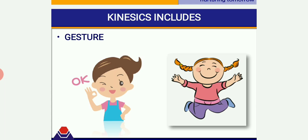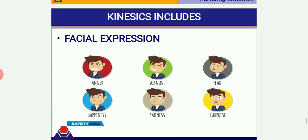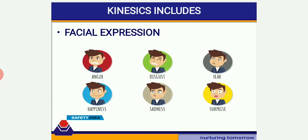Kinesics also includes gestures — the hand and body movements. Correct gestures give the audience a proper impression and expression. Common gestures include the V sign, the victory sign, and the thumbs-up gesture. Kinesics also includes facial expressions; correct facial expressions maintain the interest of the audience. When you have proper expressions, it complements your presentation and helps the audience stay interested.